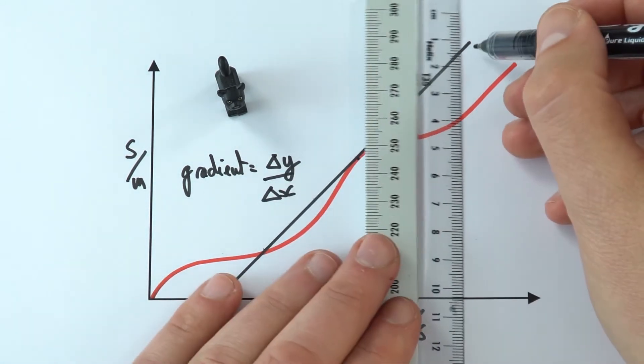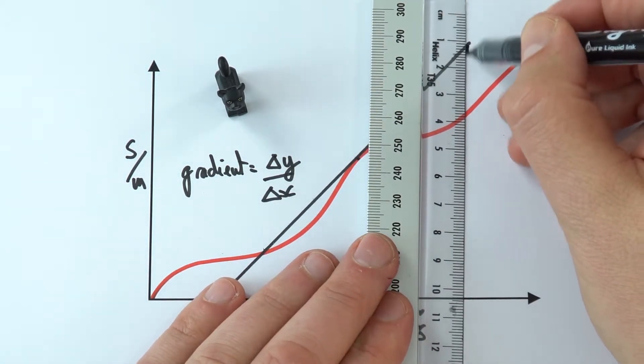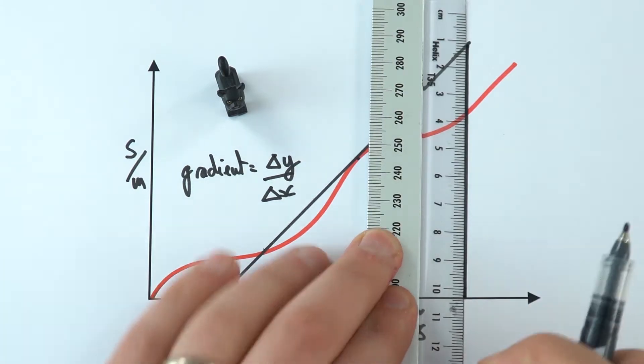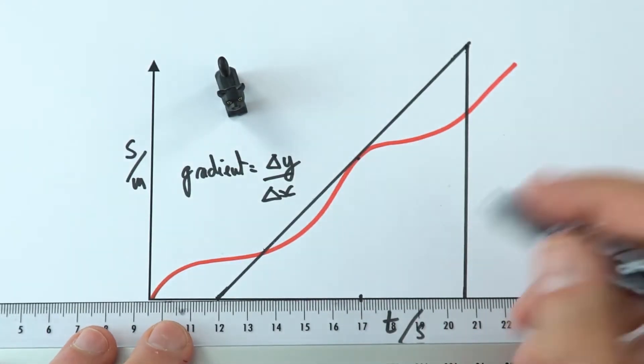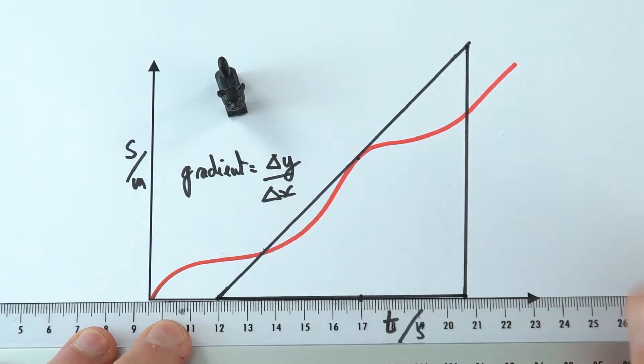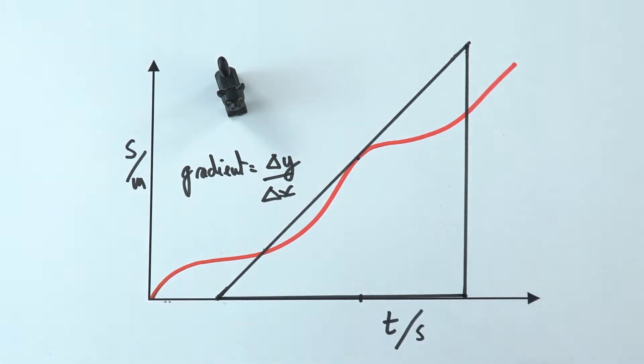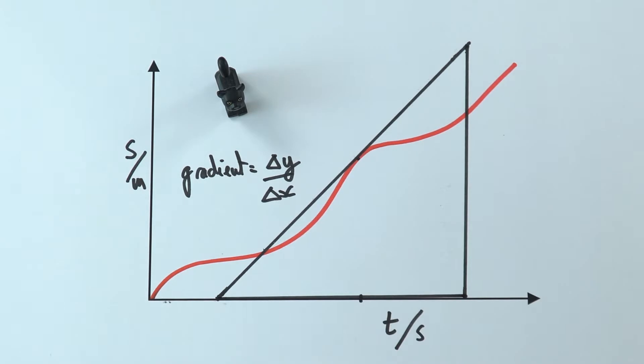I'm actually going to draw a big triangle to show this as well. So if I draw a triangle onto that line that I drew, this means it's easier when it comes to working at your coordinates, both at the start and the end.